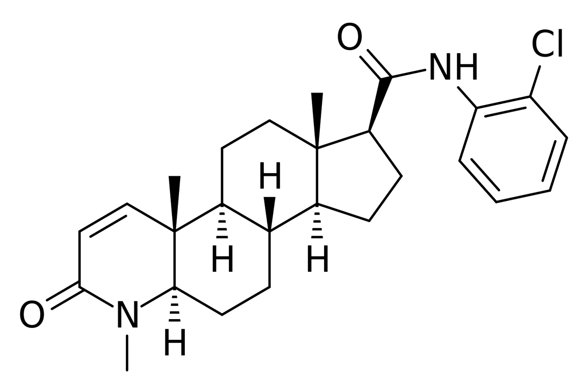CL4-IS1 is a dual anabolic androgenic steroid and 5-alpha reductase inhibitor. It is a potent and selective full agonist of the androgen receptor, with values of 12nM, 6nM, and 10nM respectively. Structurally, CL4-IS1 is a 4-azosteroid.